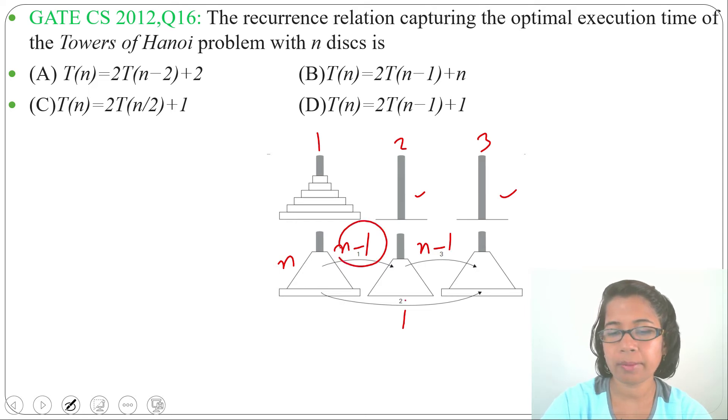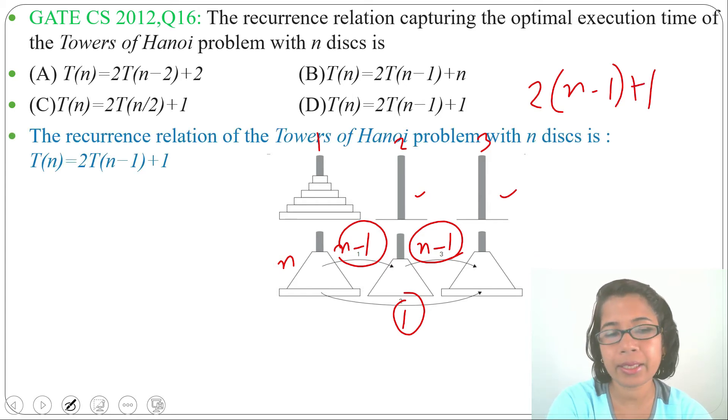So n-1 plus 1 plus n-1, so total number of moves will be 2(n-1) + 1. So we can write the recurrence relation as T(n) = 2T(n-1) + 1.